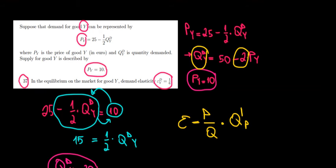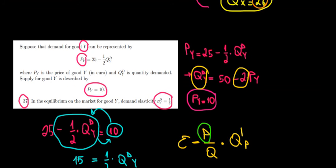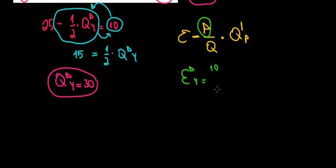In other words, we can calculate the elasticity of demand. So the elasticity of demand of good Y is equal to the price in equilibrium, which is 10 euros, divided by the quantity in equilibrium, which is 30, multiplied with the slope, which we saw above, that's equal to minus 2.